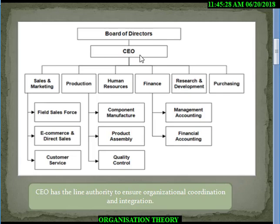We have a board of directors, then line authority comes to the CEO, who actually divides the work into various divisions or departments — like sales and marketing functions.